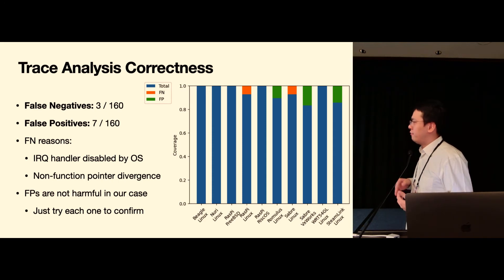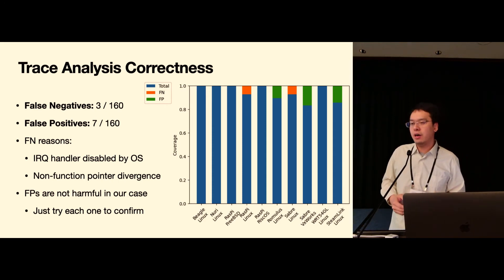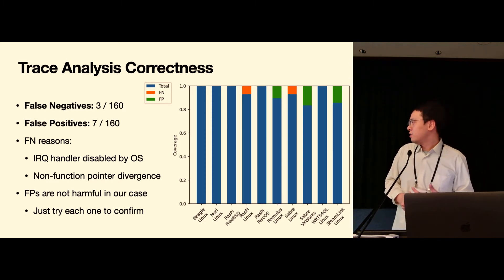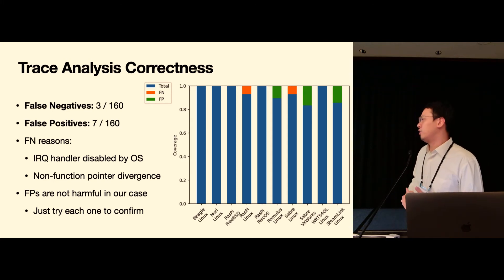And we also show that we can achieve that with very low false negatives and also very few false positives. One of the reasons for the false negatives is that some of the IRQ handlers could already be disabled by the operating system by the time we took the snapshot.